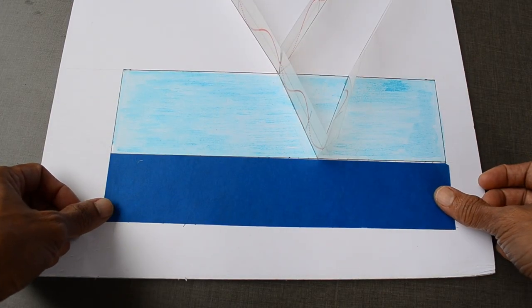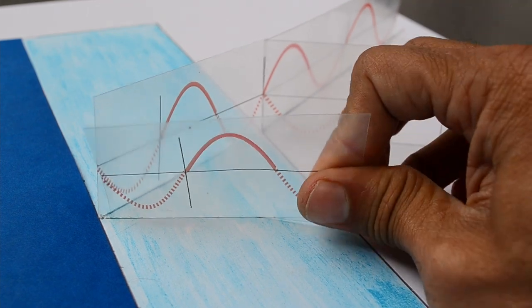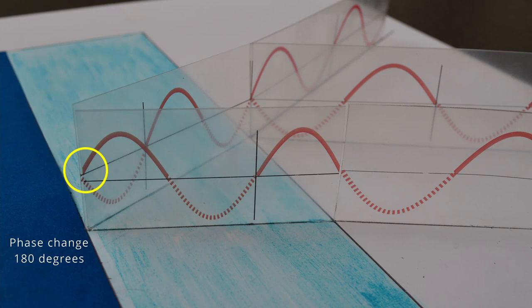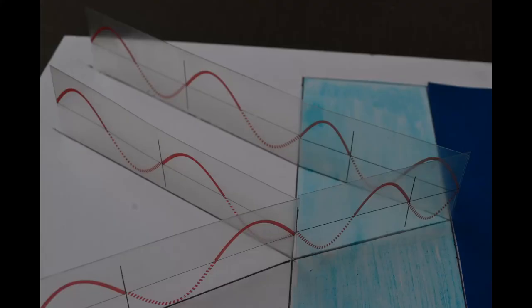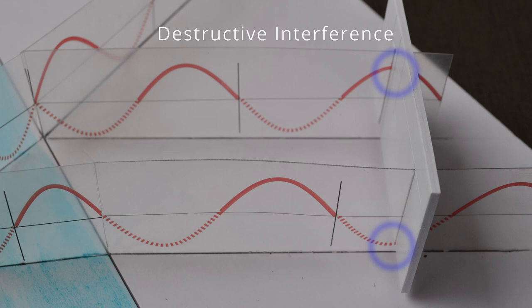How about changing the medium which is denser than water? There will be 180 degree phase change at this boundary. Resulting reflected waves will look like this. Now, two waves are out of phase. This is also known as destructive interference.